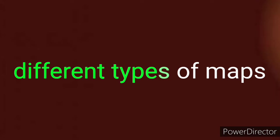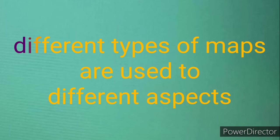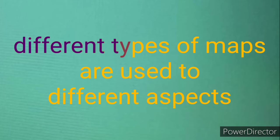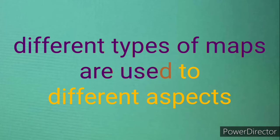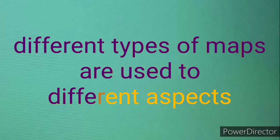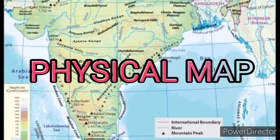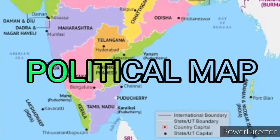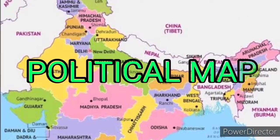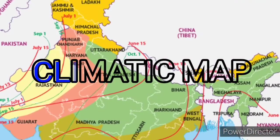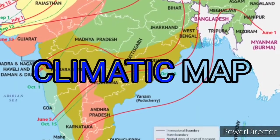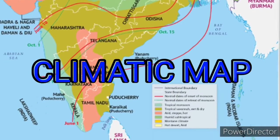There are different types of maps used to represent different aspects. The first one is physical maps, next political maps, and the third one is climatic maps.